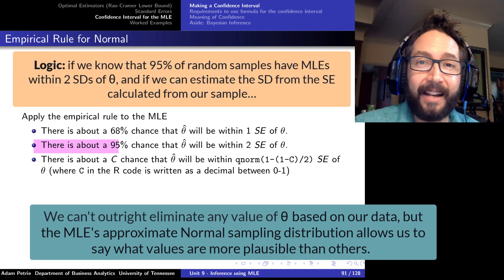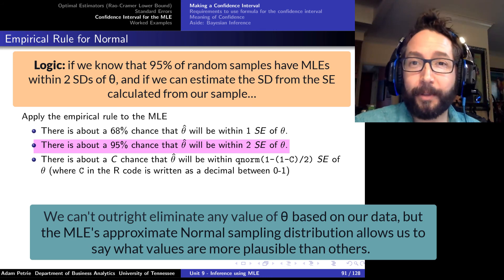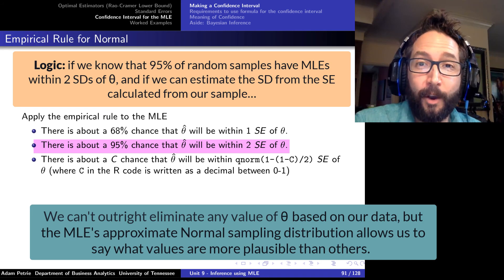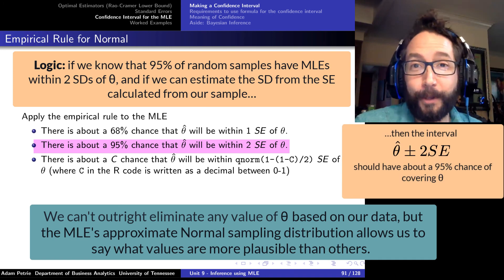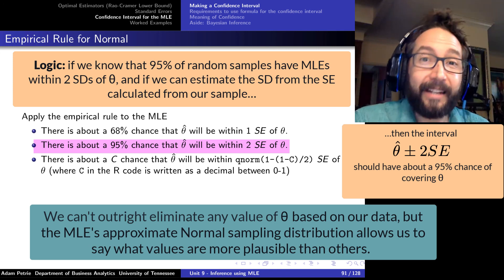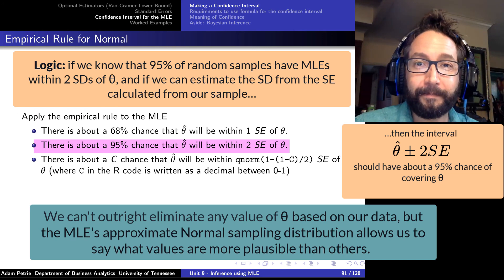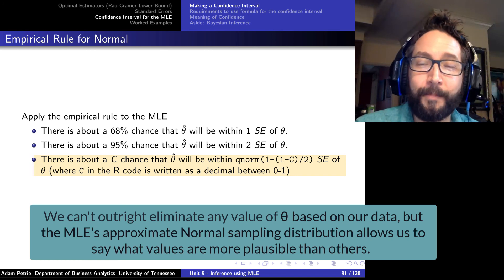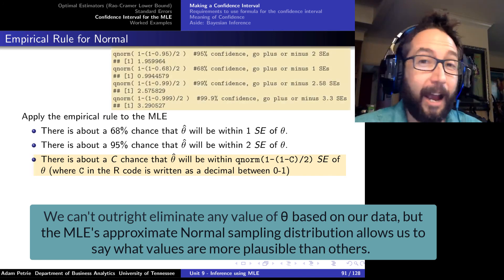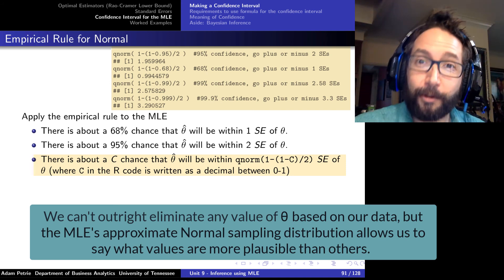Since we know that 95% of the time we're going to observe a theta hat that's within plus or minus two standard deviations of theta, we can flip that statement and say that based on the one value of theta hat measured from our sample, if we go plus or minus two standard errors away from it, that interval should have about a 95% chance of covering theta. If we want different chances, we can adjust using the Q-norm function to find how many standard errors to go from theta hat.